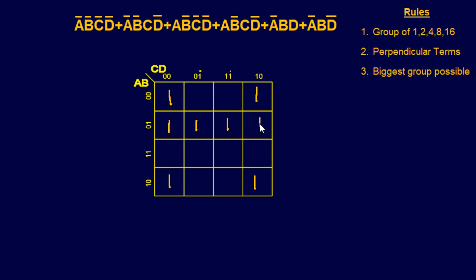Now we need to find the groups. Looking at this, I see one group of four and then smaller groups. One trick is you can take the four corners, because the corners create their own group. So I'll go ahead and switch colors and attack the corner group — that cell, that cell, that one, and that one.